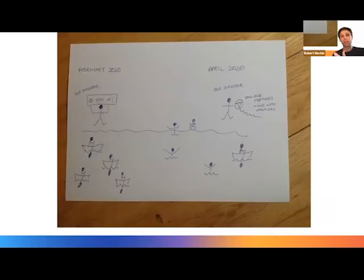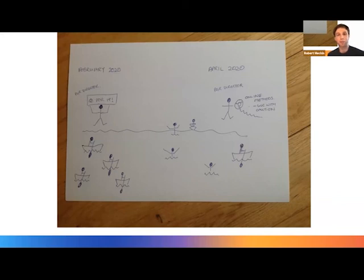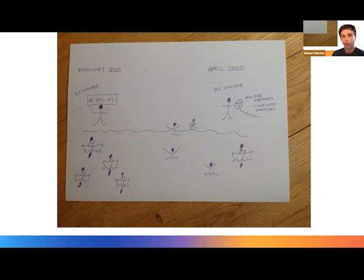Here's an image which Christine Hein at the University of Surrey gave us permission to share, just to give you an indication of the kinds of things produced. This is from her view as a PGR Director, seeing PhD students navigating through the river of the last year.